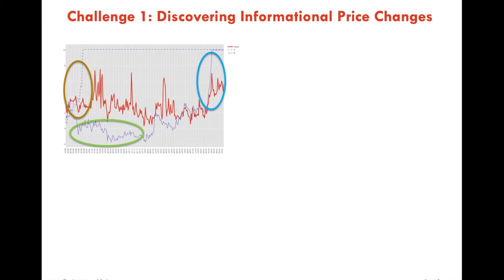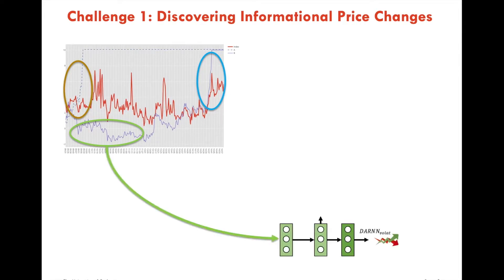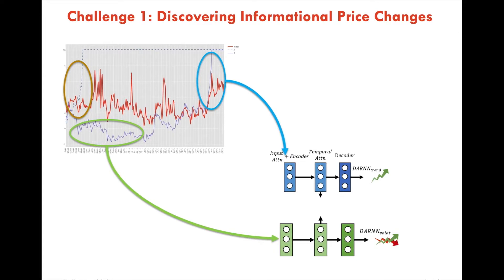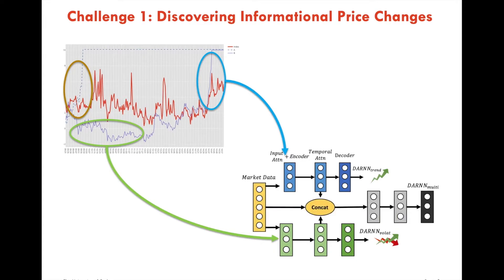We address this problem using a multi-task framework. We use two DARN submodules to encode both volatility and trend features, and use another DARN module on top of them to output representations to later modules.